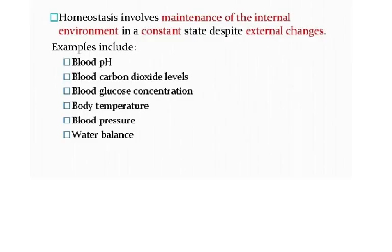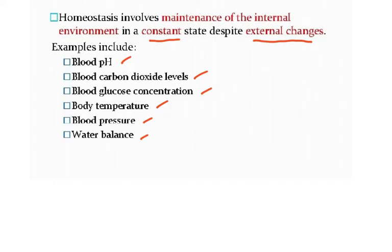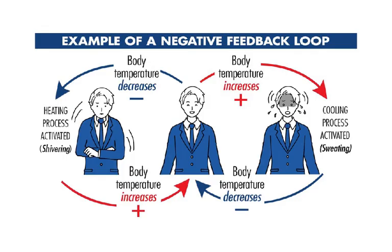Homeostasis involves the maintenance of the internal environment in a constant state despite external changes. Examples include blood pH, blood carbon dioxide levels, blood glucose concentration, body temperature, blood pressure, and water balance. Negative feedback: if body temperature decreases, the heating process is activated — shivering — and body temperature increases. If body temperature increases, the cooling process is activated — sweating — and body temperature decreases. This is a negative feedback loop.